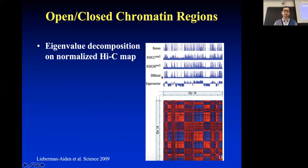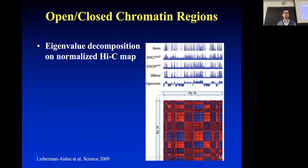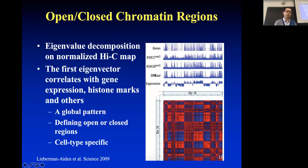The DNase experiment measures open versus closed chromatin. DNase is a protein that can cut the DNA — if it can cut, it's an open region. Genes and histone modifications also indicate open and closed DNA. After people define these open and close regions, they use a technique called eigenvalue decomposition. The eigenvector is really the best one-dimensional approximation of the pattern in the whole matrix.